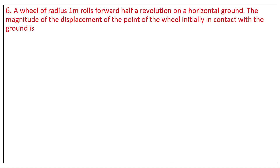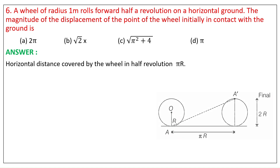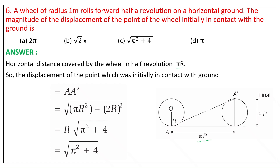Question 6. A wheel of radius 1 meter rolls forward half a revolution on a horizontal ground. The magnitude of the displacement of the point of the wheel initially in contact with the ground is equal to root of (pi² R² plus 2R²), that is R times root of (pi² plus 4). Where R equals 1, therefore the answer is root(pi² plus 4).